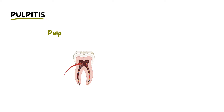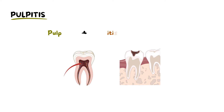The pulp is the innermost part of the tooth containing nerves and blood vessels, and '-itis' is a medical suffix denoting inflammation. Therefore, pulpitis is the inflammation of the dental pulp.